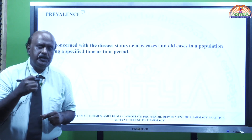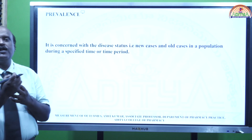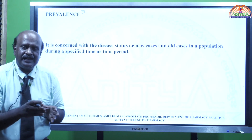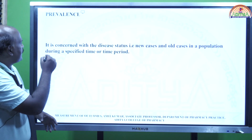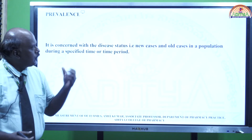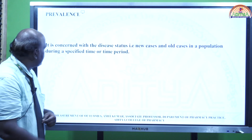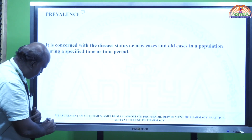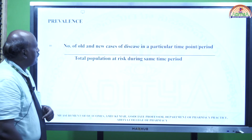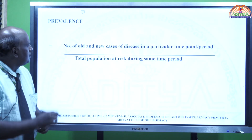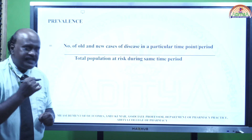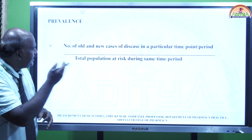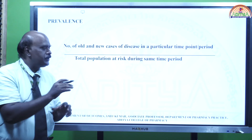Now, what is prevalence? Prevalence is basically a combination of old cases and new cases at a given point of time or for a time period. It concerns the disease status — that is, new cases and old cases in a population during a specified time or time period. Prevalence equals the number of old and new cases of a disease at a particular point or time period divided by the total population at risk during the same time period.